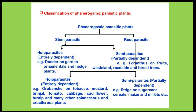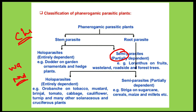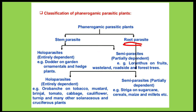Semi-parasites have chlorophyll present, meaning they perform photosynthesis and make their own food. However, the machinery to absorb water and nutrients from the root is absent in them, so they are dependent on the host for water and nutrients. Root parasites are also of two types: holoparasites and semi-parasites.